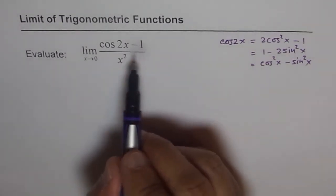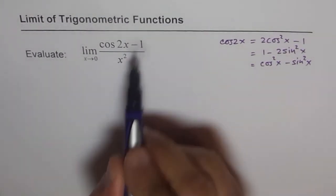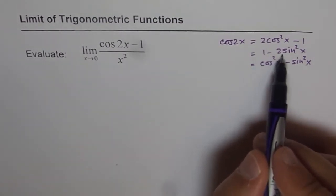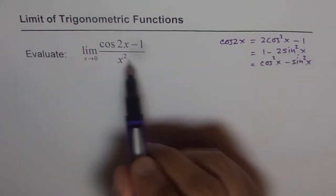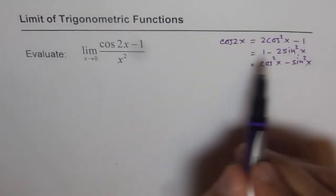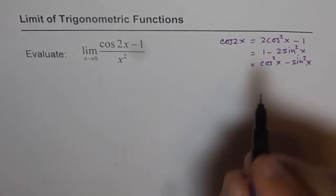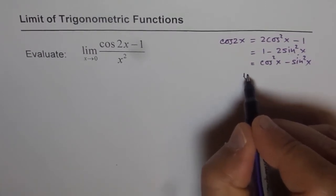In this case, we have cos 2x minus 1. So we will prefer to apply 1 minus 2 sin squared x. In that case, 1 and 1 will cancel out. We will have 2 sin squared x and x squared in the denominator will help us find the limit.